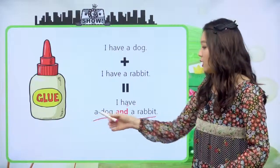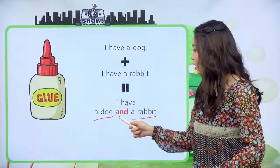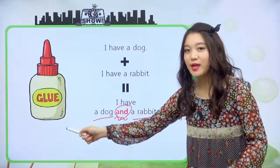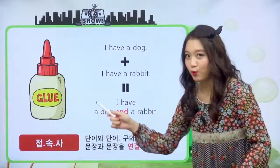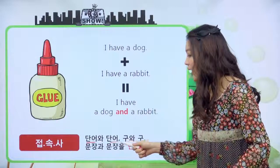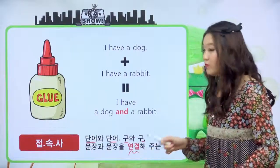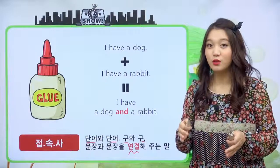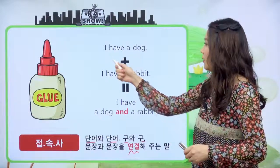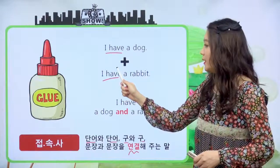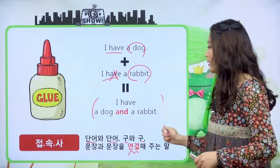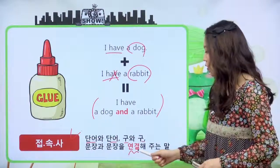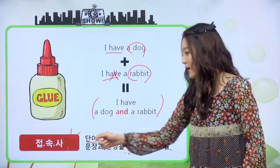여기에서 이 glue, 접착제 역할을 하는 아이가 누굴까요? 바로 and가 나와서 이 두 문장을 연결해주는 접착제 역할을 하고, 문장에서 이런 역할을 하는 아이들을 접속사라고 합니다. 접속사는 단어와 단어, 구와 구, 문장과 문장을 연결해주는 말이다. 영어에서는 반복되는 말이 계속 나오는 걸 싫어하기 때문에, 접속사를 통해 더 간단하고 효율적인 문장을 만드는 거예요. 그래서 접속사라고 한다.